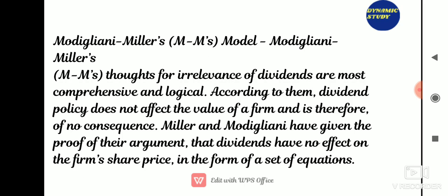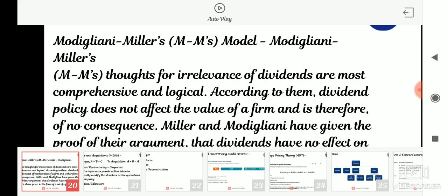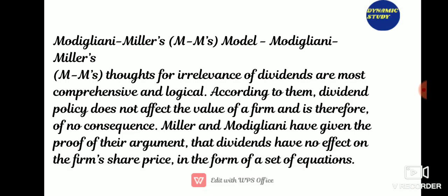Residual dividend model: if a firm wishes to avoid issuing shares, it will rely on internally generated funds to finance new positive NPV projects. Dividends can only be paid out of what is left over — this leftover is called residual, and such a dividend policy is called residual dividend policy. The dividend discount model is a more conservative variation of discounted cash flow that says a share of stock is worth the present value of its future dividends rather than its earnings. Cash dividend is the most important form of dividend, where stockholders receive checks for the amount due to them.